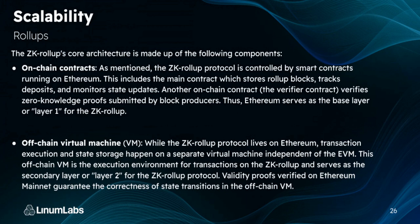The ZK rollup also has an off-chain virtual machine. A virtual machine is a computing system that emulates another one. While the ZK rollup protocol lives on Ethereum, transaction execution and state storage happen on a separate virtual machine independent of the EVM — the Ethereum virtual machine. This off-chain virtual machine is the execution environment for transactions on the ZK rollup and serves as the layer two. Validity proofs verified on Ethereum mainnet guarantee the correctness of state transitions in the off-chain VM — that's what the verifier contract in Solidity handles.